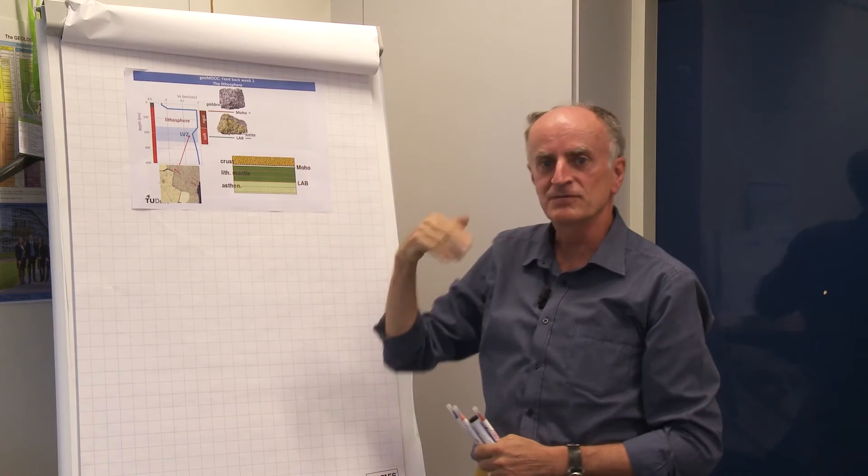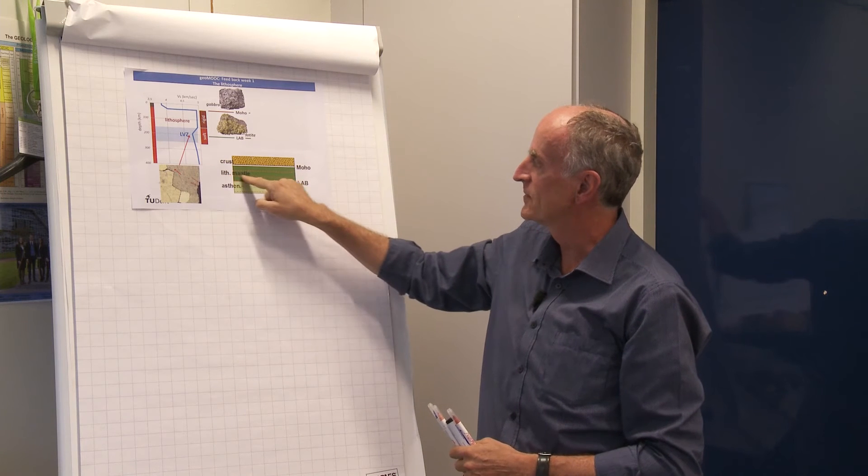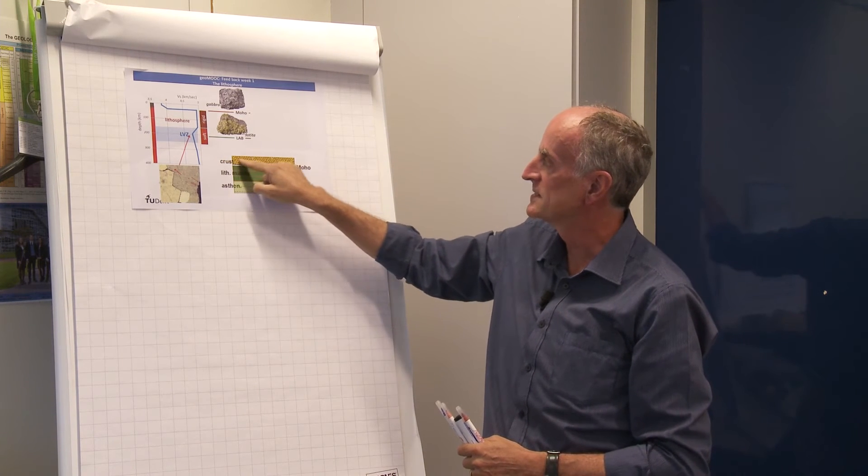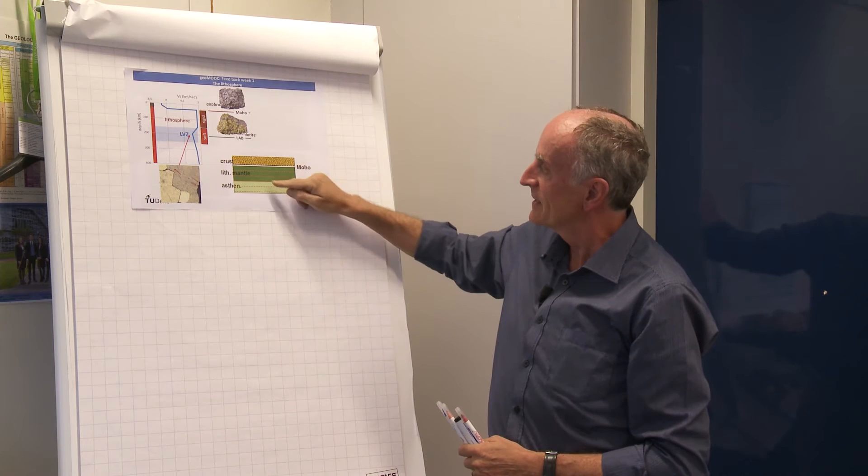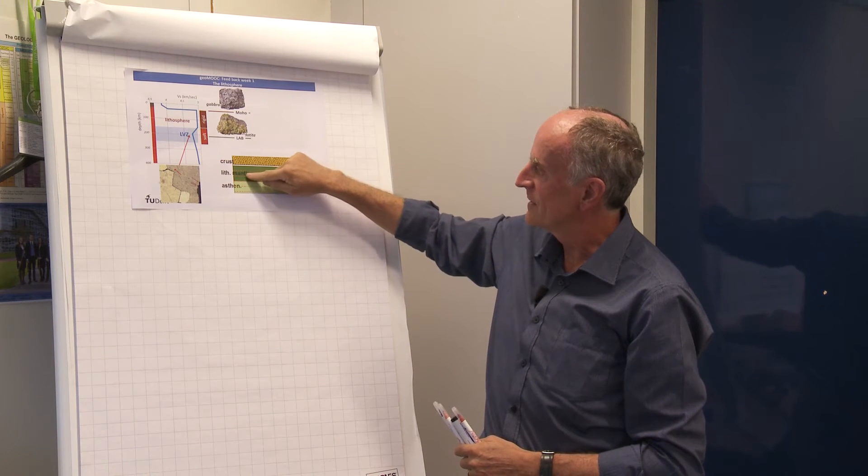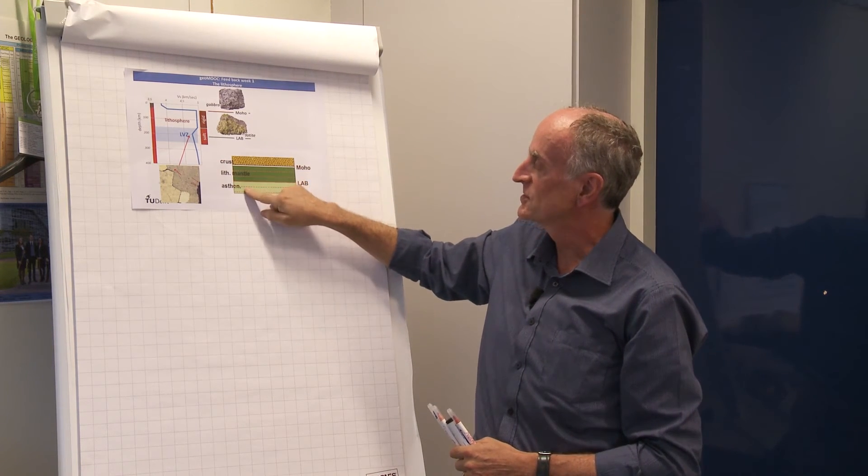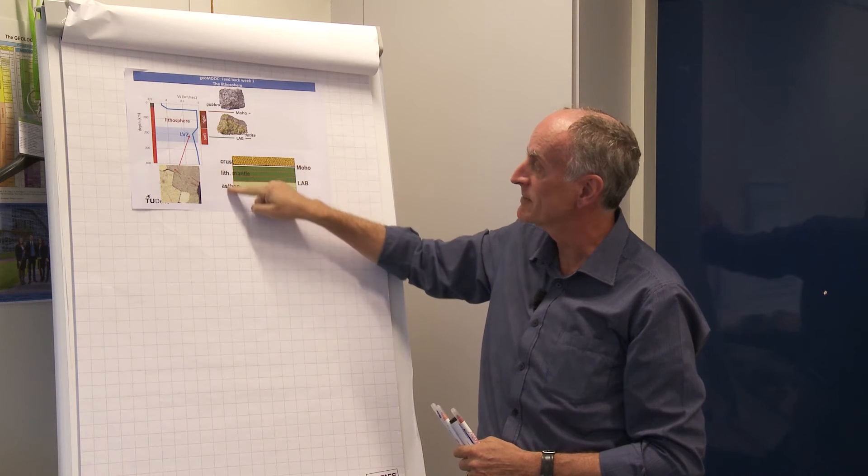But we said that the lithosphere is composed of two layers. One is the lithospheric mantle, the other one is the crust. In terms of rock composition, the lithospheric mantle is similar to the composition of the asthenosphere, so it is part of the mantle.